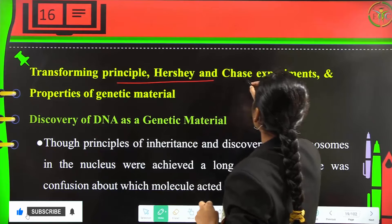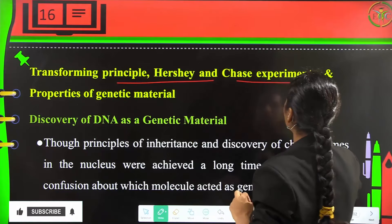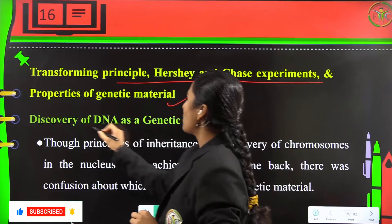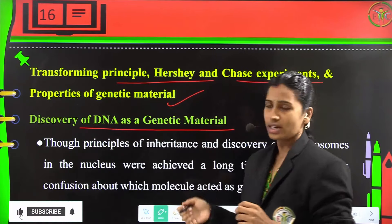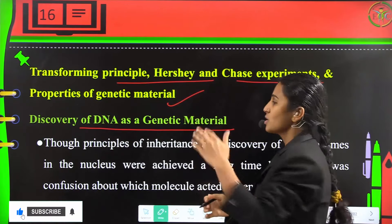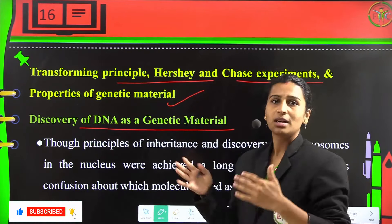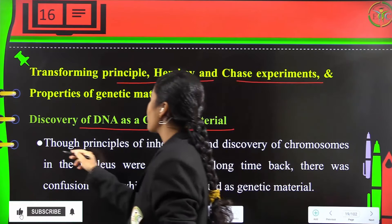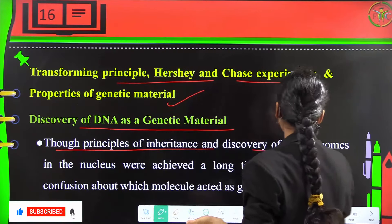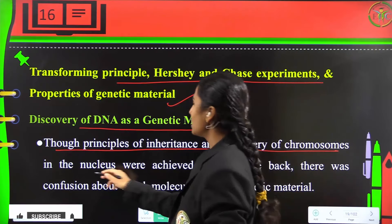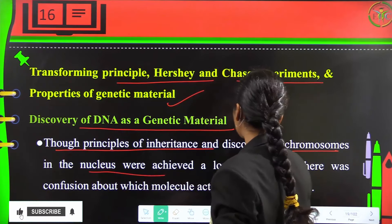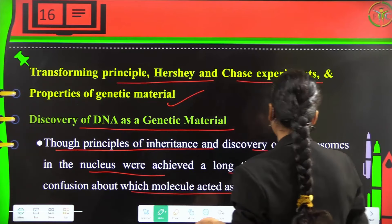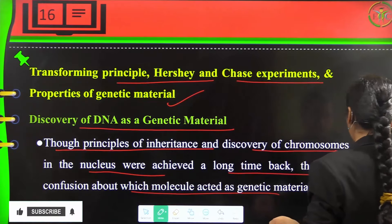Coming to the transforming principle and the discovery of DNA as genetic material. Though principles of inheritance and discovery of chromosomes in the nucleus were achieved long ago, there was confusion about which molecule acted as the genetic material.